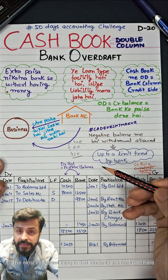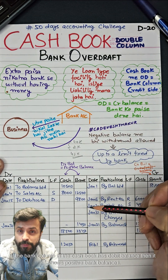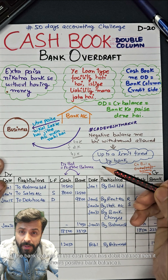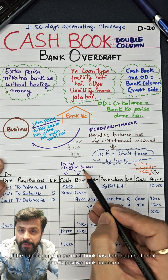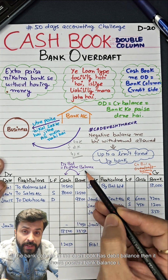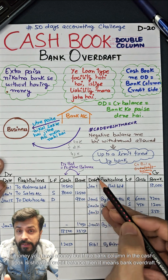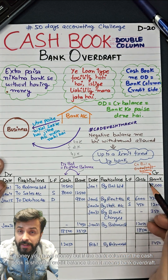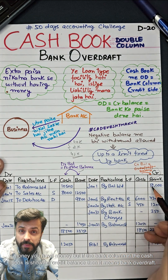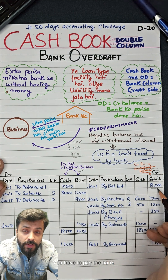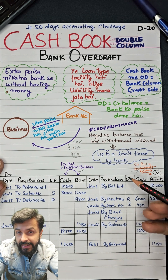The most important thing is that students are confused here. If the bank column in the cash book has a debit balance, then it shows a positive bank balance — meaning you have money. But if the bank column in the cash book is showing a credit balance, then it means bank overdraft — you have to pay the bank, and your account is running in negative.